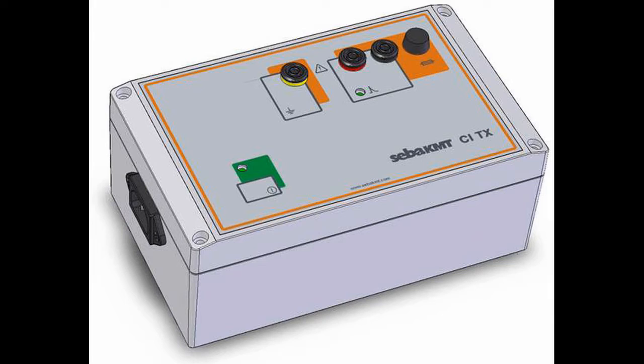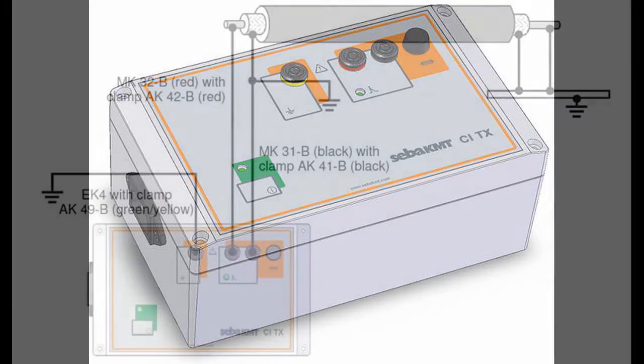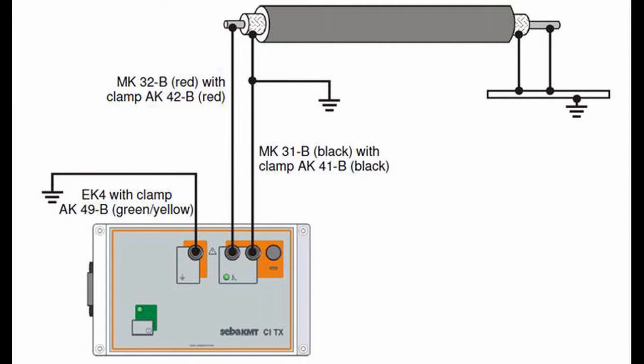The standard impulse generator, CI-TX, is a rechargeable battery or AC powered unit which injects a pulse of up to 100 amps into a de-energized cable to be identified.